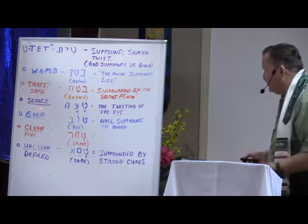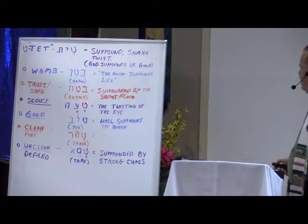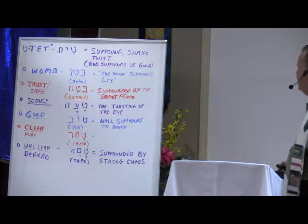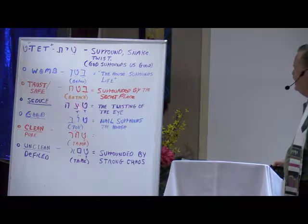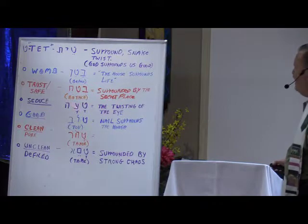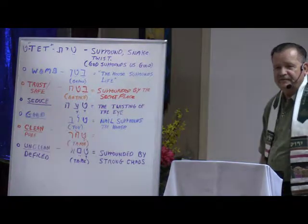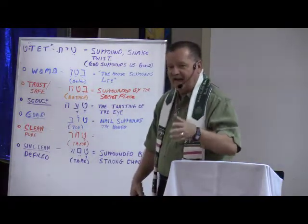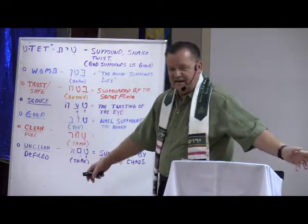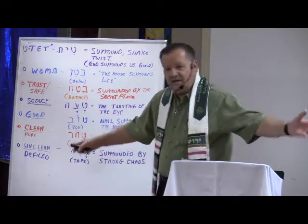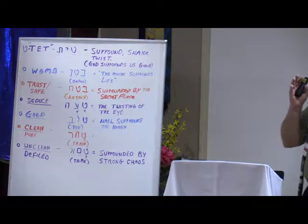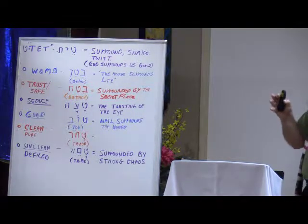The word 'subdue' is interesting. Remember, the word tet can mean surround, snake, or twist. The twisting — in this word, 'ayin' means 'I' and hey means to declare. The twisting of the eye is revealed when you are seduced. James says when you are led away by what you're looking at because of lust, it produces sin, and the sin reveals that your eye got twisted. That's what it says in Hebrew. So we need to be careful that the enemy does not twist our eyes in what we see.